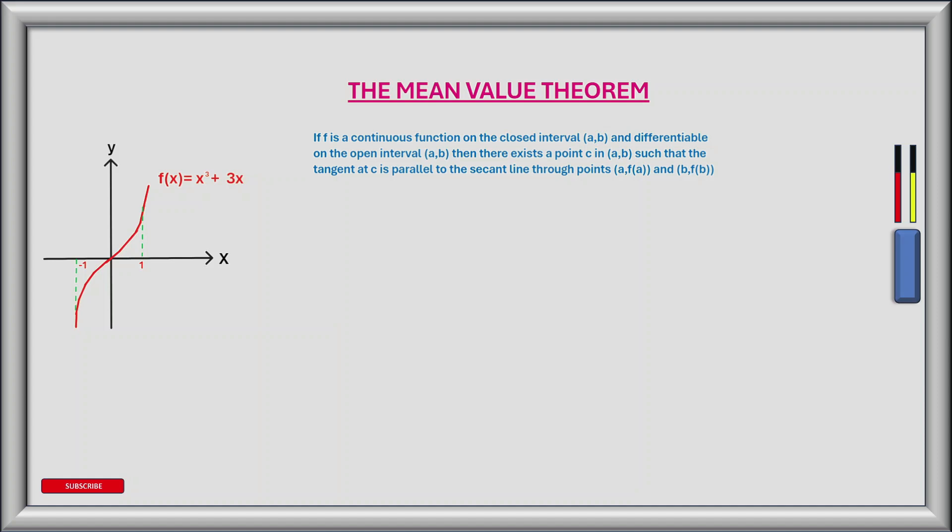So firstly, is f a continuous function? I've plotted f on the left here and as you can see it's continuous — there are no breaks in the function. Next, is it differentiable across the interval minus 1 to 1? There are no cusps or corners and there are no vertical tangents, so yes it is differentiable. Therefore there must be a point or points where the tangent or tangents of the curve are parallel to the secant line drawn between the points minus 1 and 1 on the x-axis.